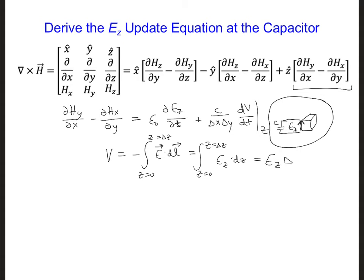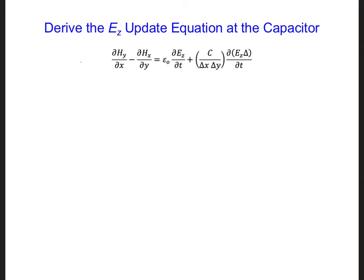So we can put on the right side of Ampere's law, we have epsilon not dEz/dt plus C over delta x delta y, and now I'm going to put in dEz delta z, I'm just plugging in this for V, times dt. And this left side is the same from the curl of H. This is what we got on the previous slide.